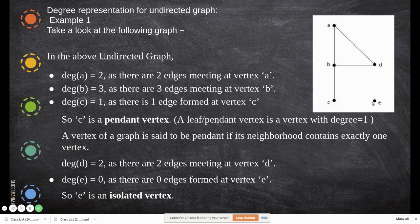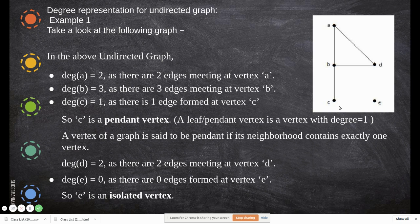For an isolated vertex, the degree is 0 — it has no edges connected to it. A pendant vertex is a vertex with degree 1. For example, C has degree 1, so it is a pendant vertex. A vertex is said to be a pendant if its neighborhood contains exactly one vertex. C is connected with B only, and B is its only neighbor, so C has only one neighbor, making it a pendant vertex.